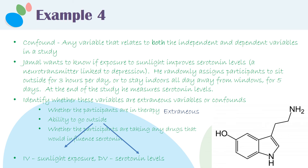The ability to go outside is probably going to be related to whether they were exposed to sunlight, because that's how sunlight exposure was manipulated — whether they were allowed to go outside or not. But it's also likely to be related to serotonin levels, because if people are told they are not allowed to go outside and have to stay away from their windows, it would influence their serotonin levels. So the ability to go outside is related to both sunlight exposure and serotonin levels — it's a confound.